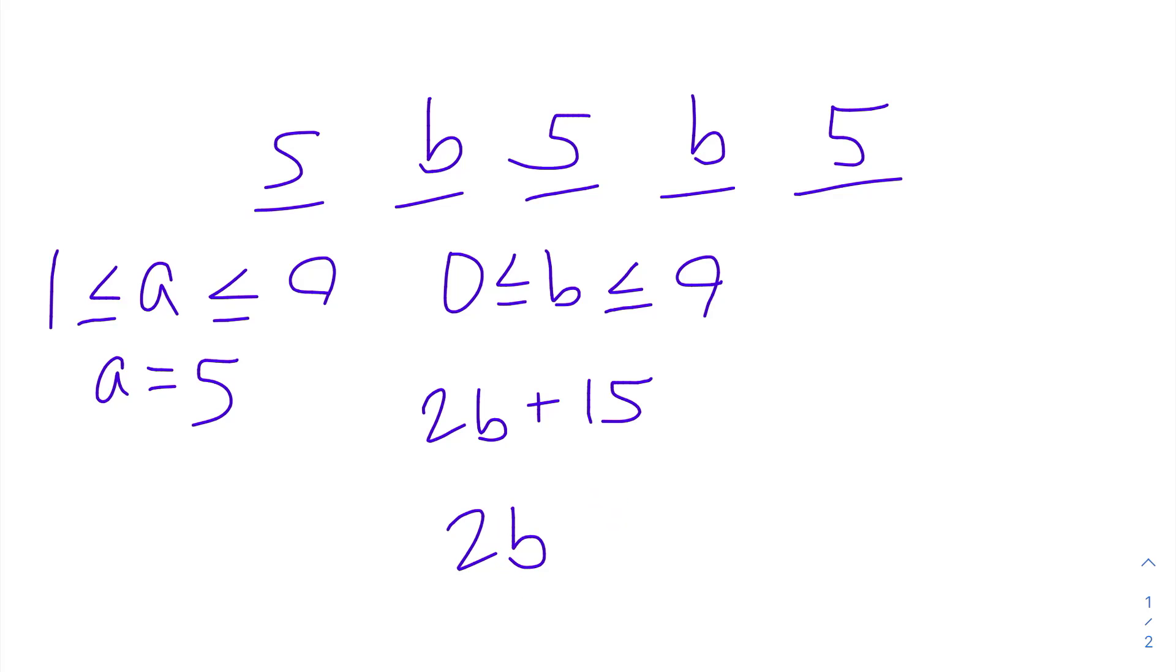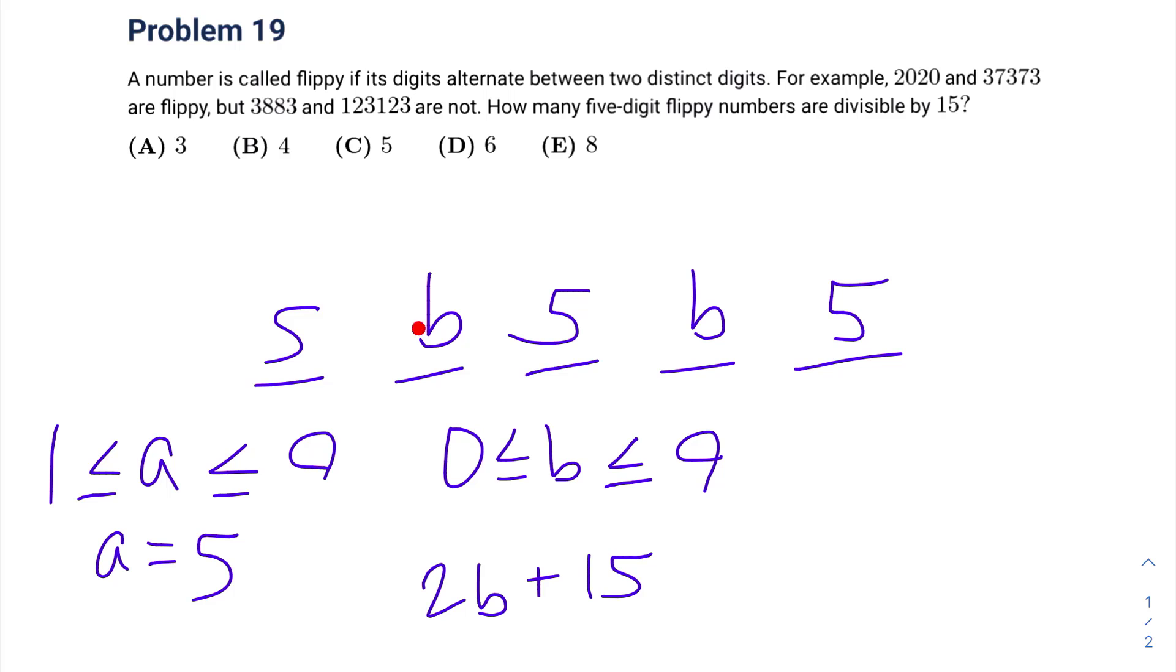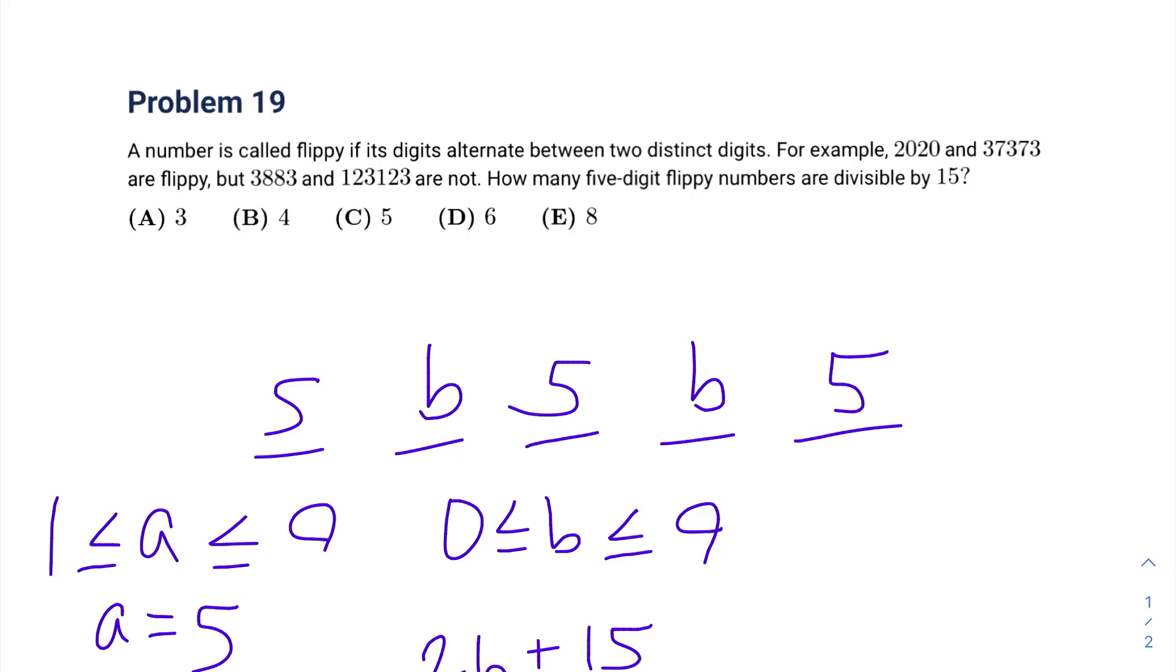So therefore, B can be 0, 3, 6, or 9. We have 4 options for what these digits are going to be. So that means we have 4 5-digit flippy numbers which are divisible by 15. So our answer is B.